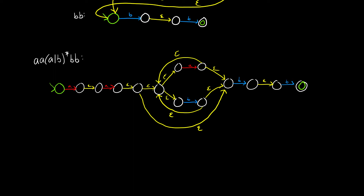Let's look at some of the inputs we could have with this regex. Let's take out the whole middle part with the Kleene star and check if we could get A, A, B, B. Following the state machine: A, A gets us here with epsilon, then we follow this epsilon to the right and get B, B to the accept state — so that's accepted. What about if we just have an A? It gets us right here, the epsilon moves us one more, but then we're stuck — so that's not accepted.